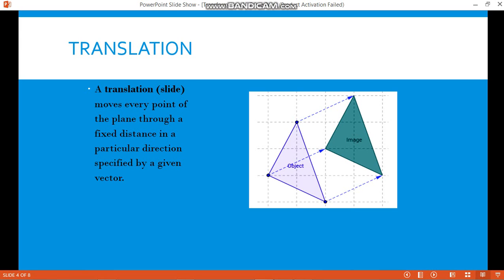Now let's talk about translation. A translation, that is what we call slide, moves every point of the plane through a fixed distance in a particular direction specified by a given vector. So, for example, here is our object at first.